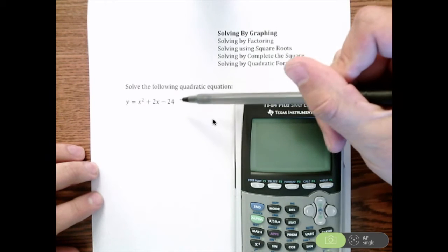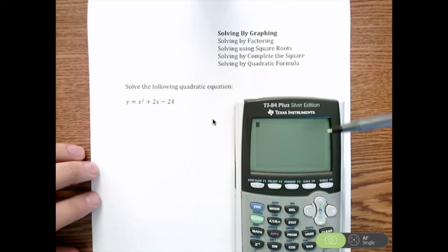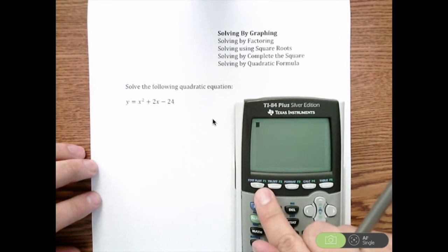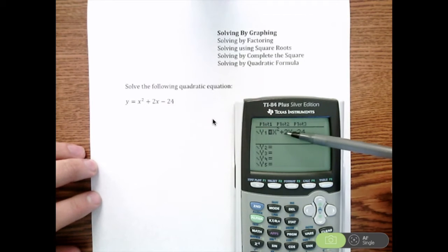So if we have y equals x squared plus 2x minus 24, and we want to solve this by graphing, we can use our graphing calculator. In the top left you have y equals, so you can go there, and you can type in your equation x squared plus 2x minus 24.